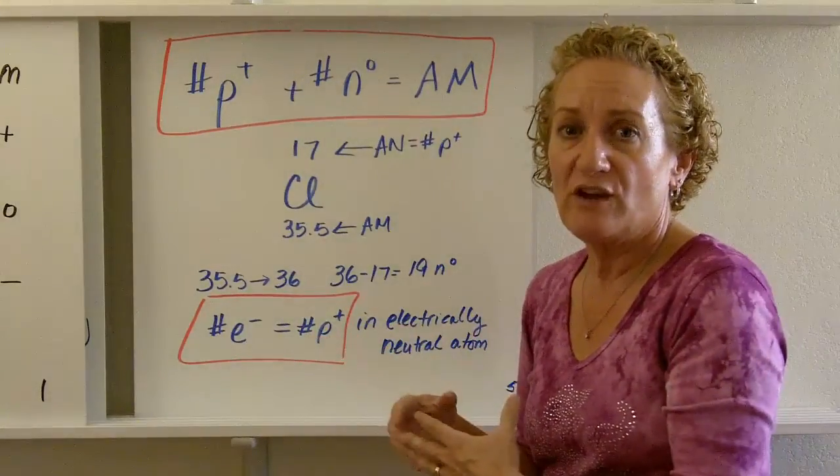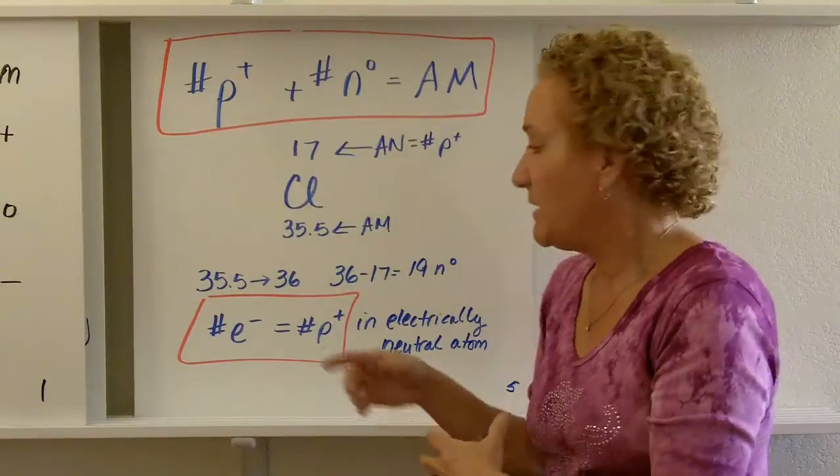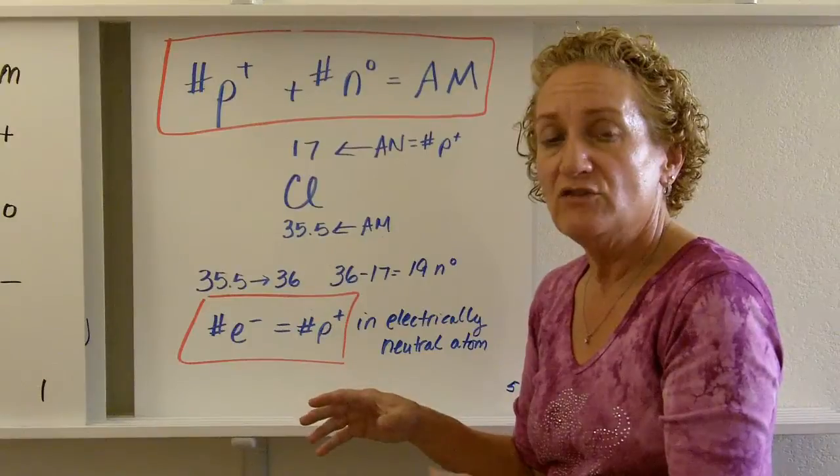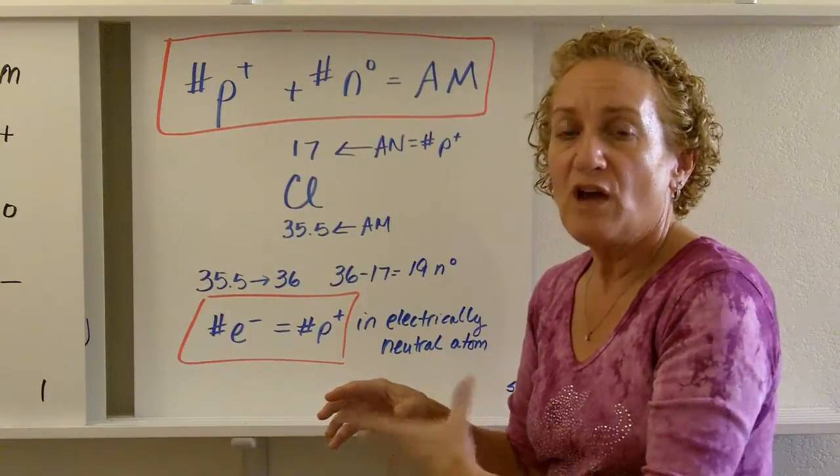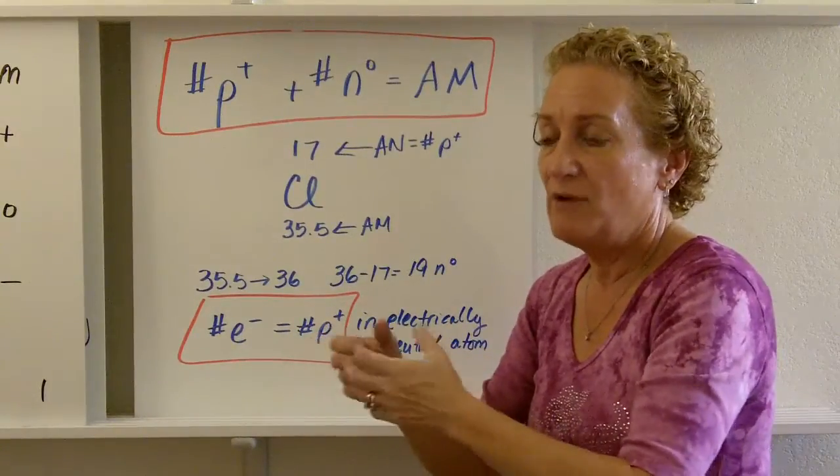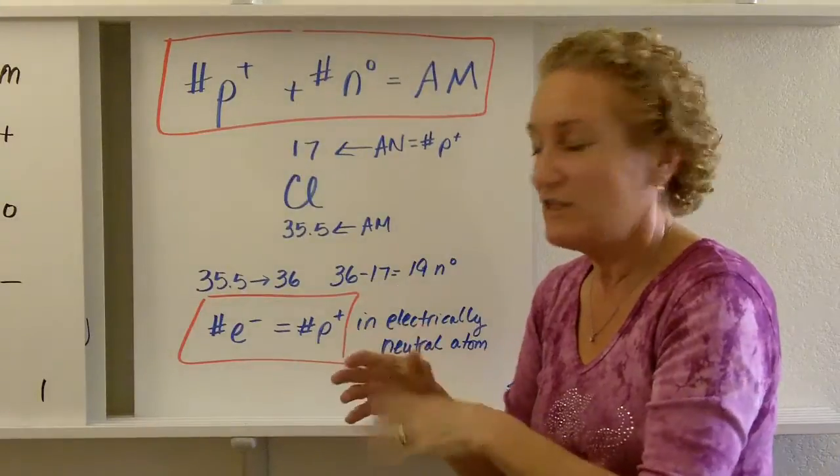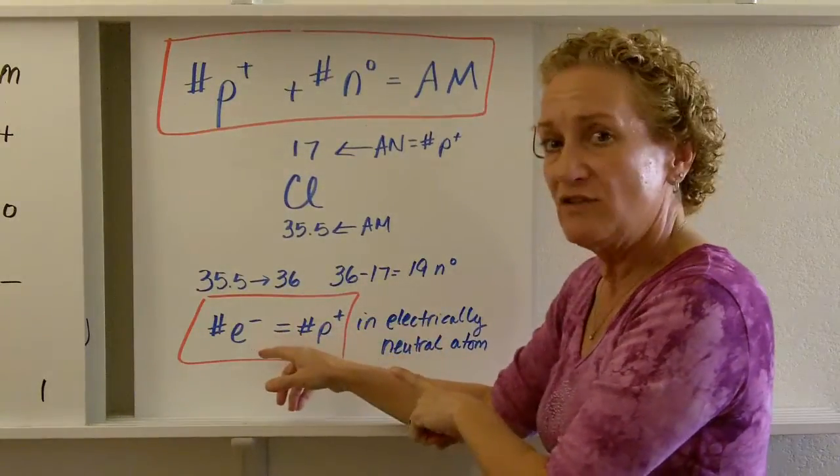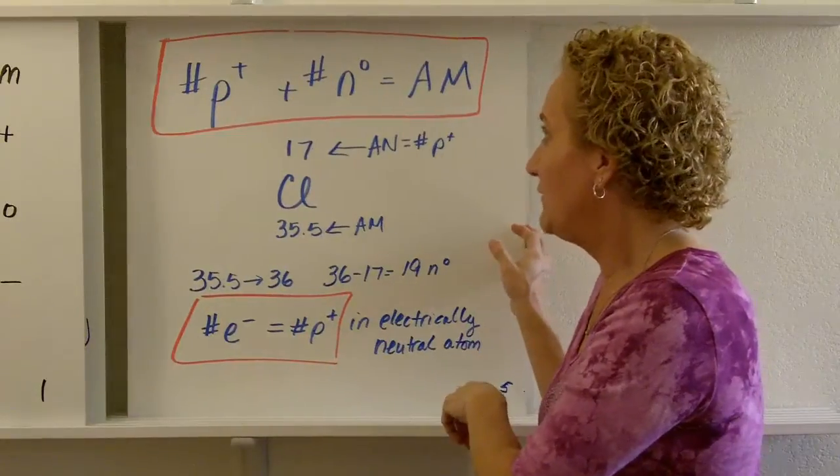So what about electrons? Well, electrons and protons are actually the easiest ones to calculate, because however many protons you have, that's how many electrons you have in an electrically neutral atom. When we talk about bonding, we add and we give and take electrons, and then all bets are off. But in an electrically neutral atom, however many electrons you have, that's how many protons you have.